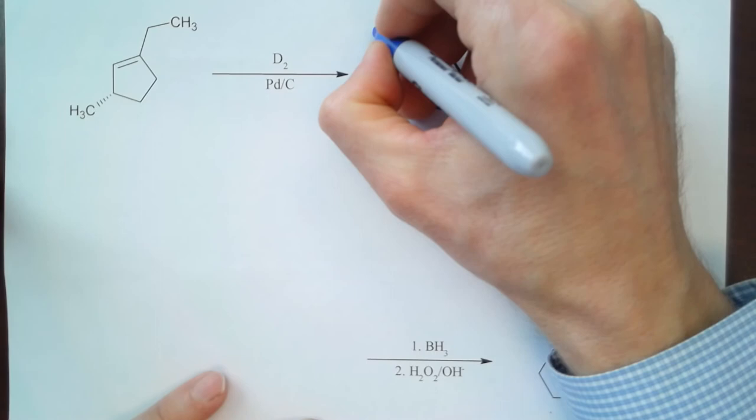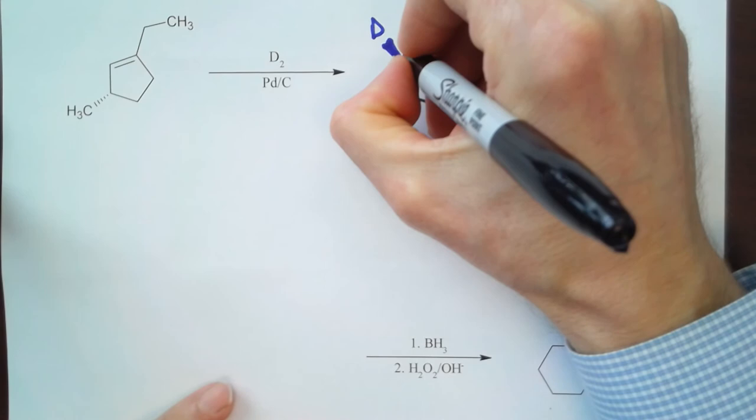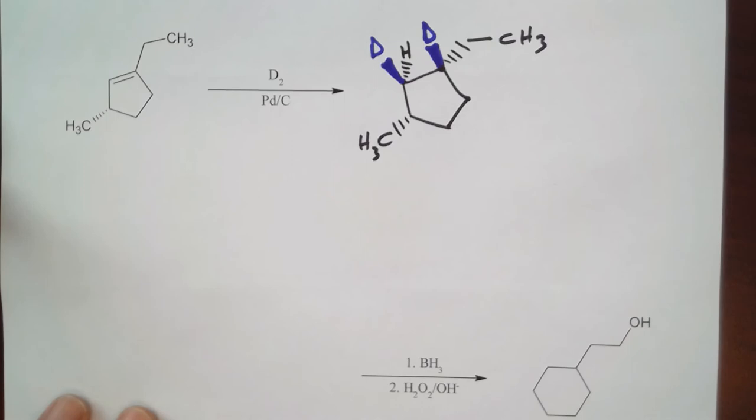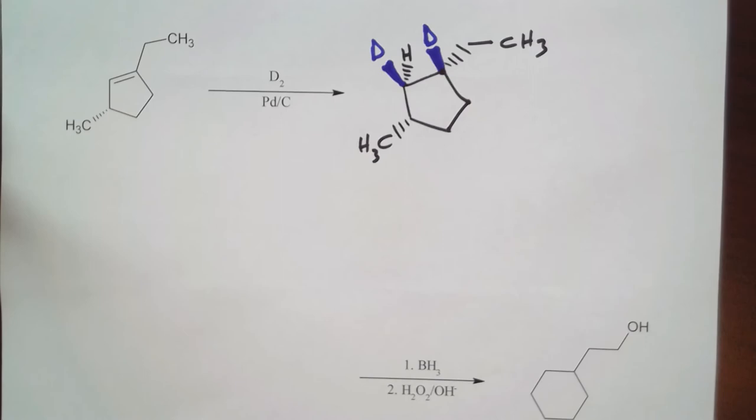So in addition to these deuteriums that we just added, there is still a hydrogen on that carbon and it is in the background. So I'm going to add deuterium to one side of the double bond. In this case I chose the top side of the double bond.